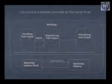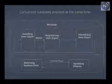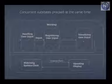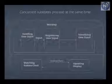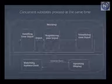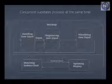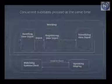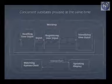In the UML diagram, the working state is the main state containing the sequential substates — awaiting, registering, and visualizing — and concurrent substates — watching the system clock and updating the display. The two categories are separated by a dotted line. The concurrent substates watch the clock, update the display for every minute, then watch the clock again — all happening concurrently with the sequential substates.